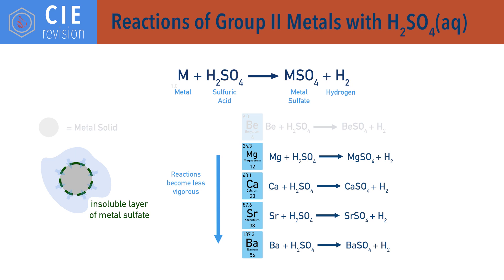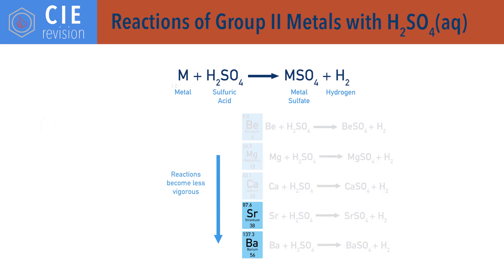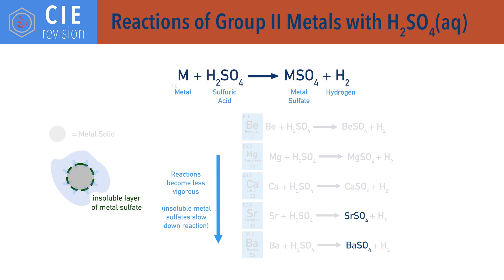For example, with strontium and barium, when they react with dilute sulfuric acid, the reaction will eventually stop before all the reactants are used up. This is because of the insoluble nature of the strontium and barium sulfate being formed, preventing the dilute acid from reaching the solid metal.